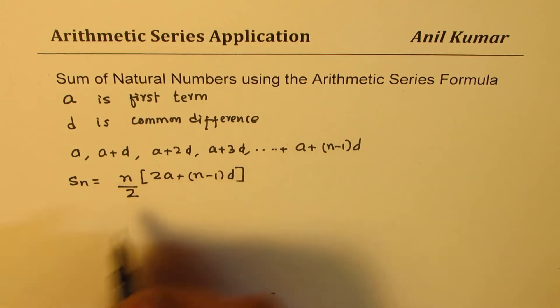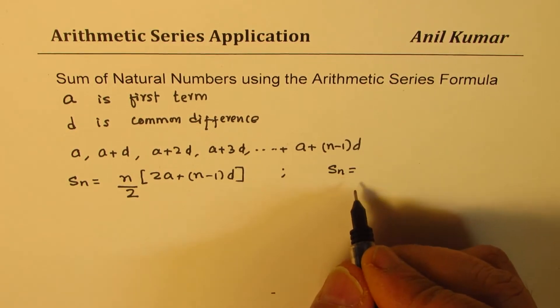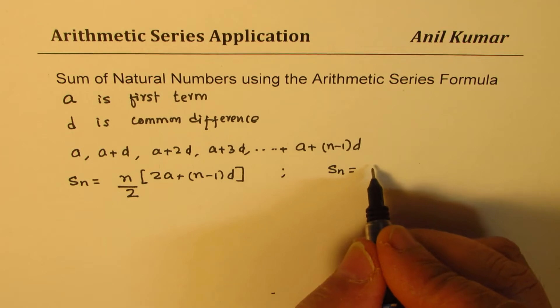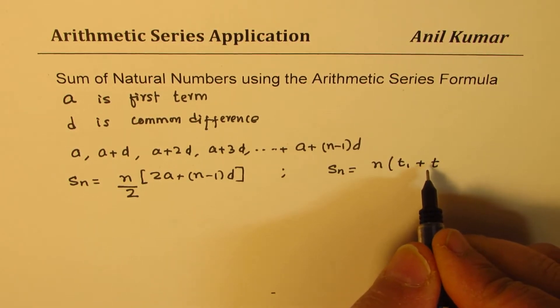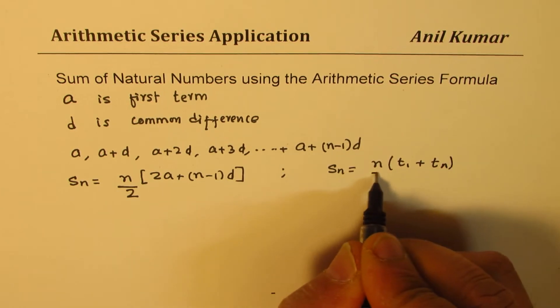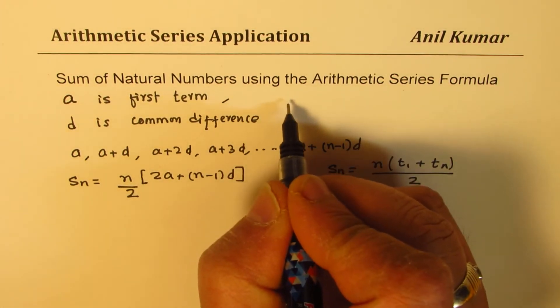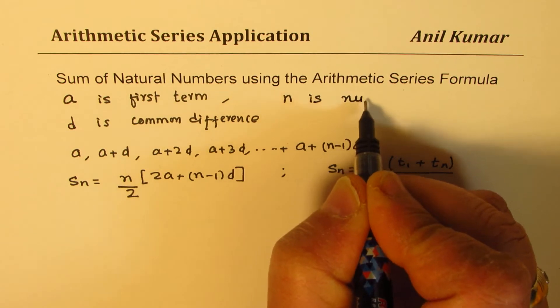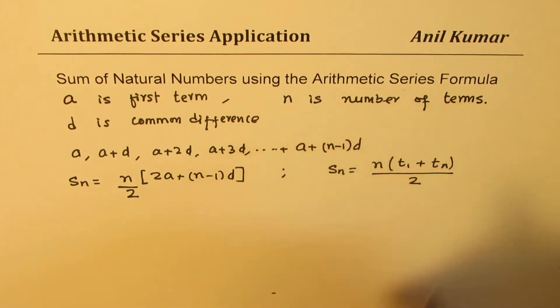The other formula which we learned was Sn equals half of n number of terms times T1 plus Tn, whatever is the nth term divided by 2. That is another formula which we learned, where n is number of terms. In our sequence, we are writing n is number of terms.